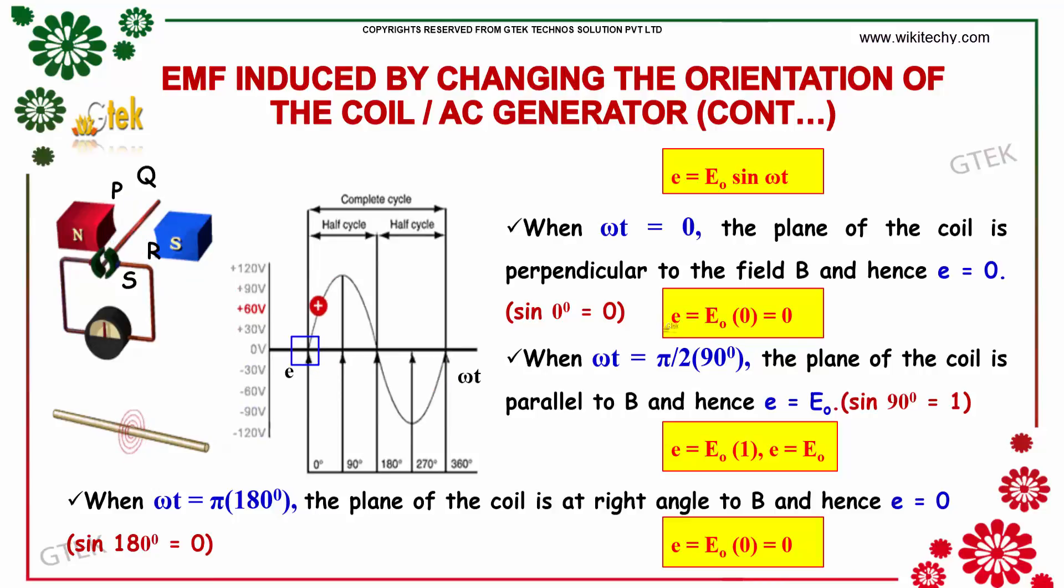E equals 0 at angle of 0. E equals maximum value here at 90 degrees. E equals 180, it's 0. So it should be negative, it's maximum for 270 and it should be at 360, it's 0.